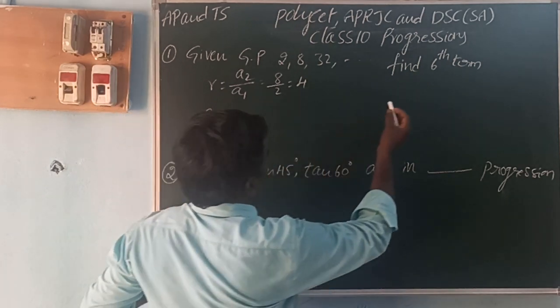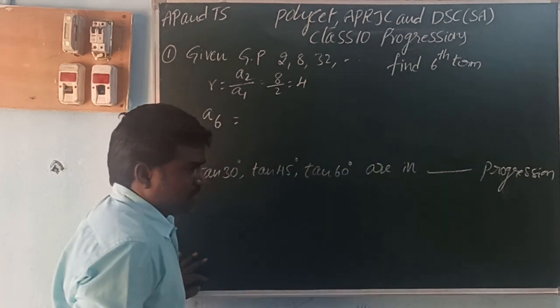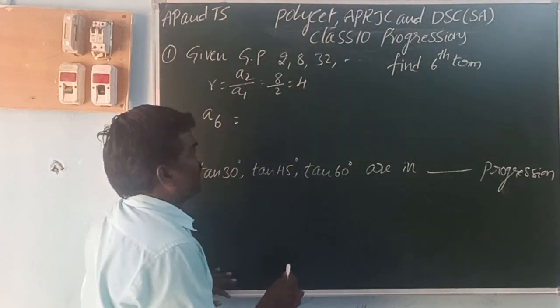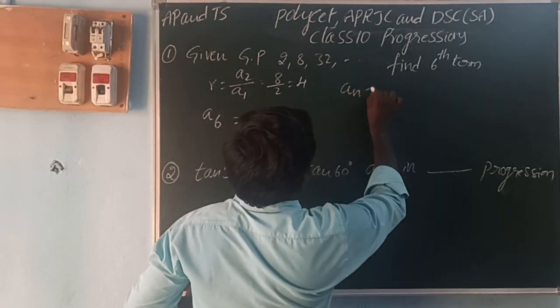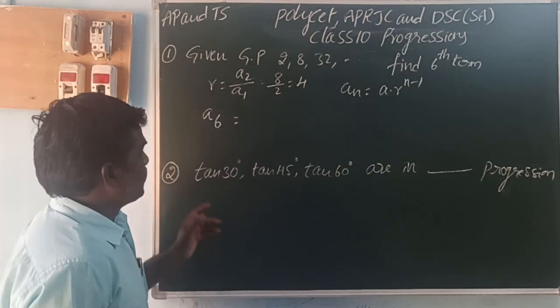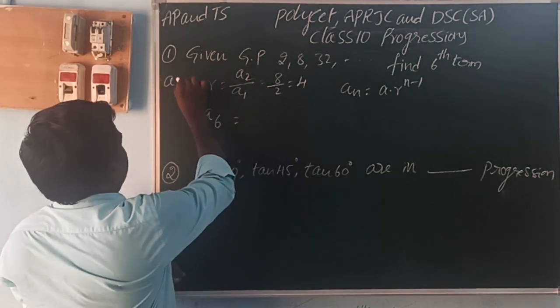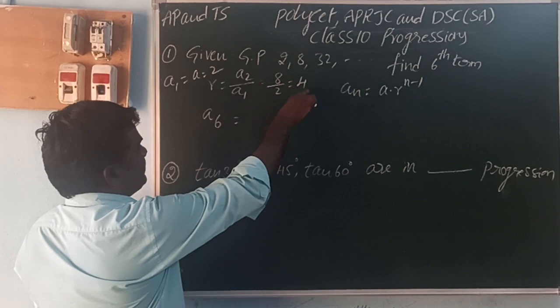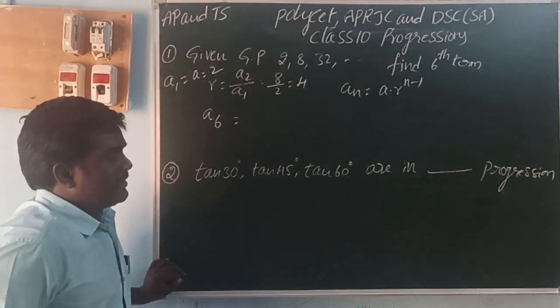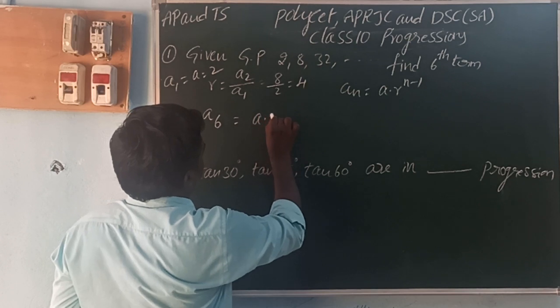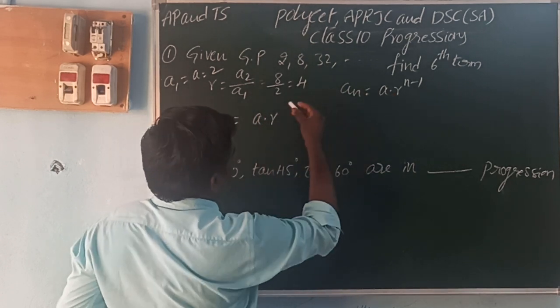For the sixth term, A6, the nth term of GP formula is An = A * r^(n-1). First term A1 = A = 2, R = 4. We are going to find 6th term, so An = A * r^(n-1) where n is 6.